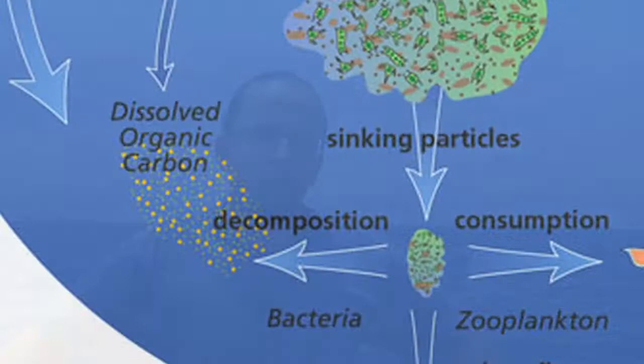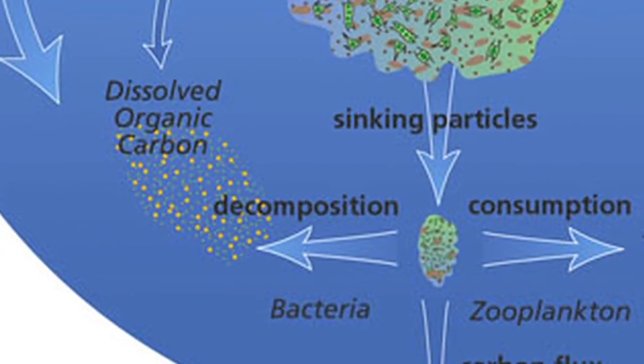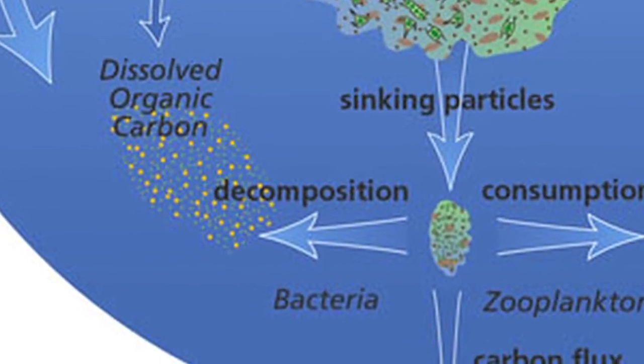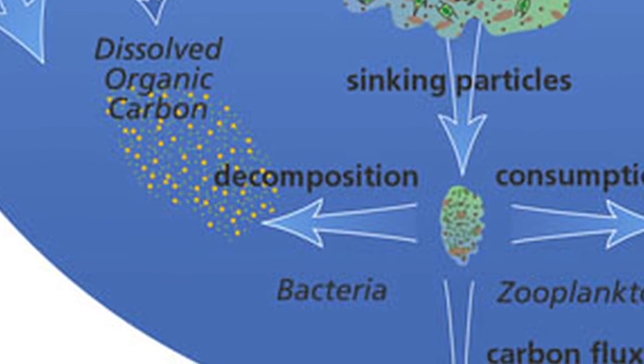We expect to find so-called heterotrophic cells. That means they do not obtain their energy from the sunlight, but from decomposing organic matter.